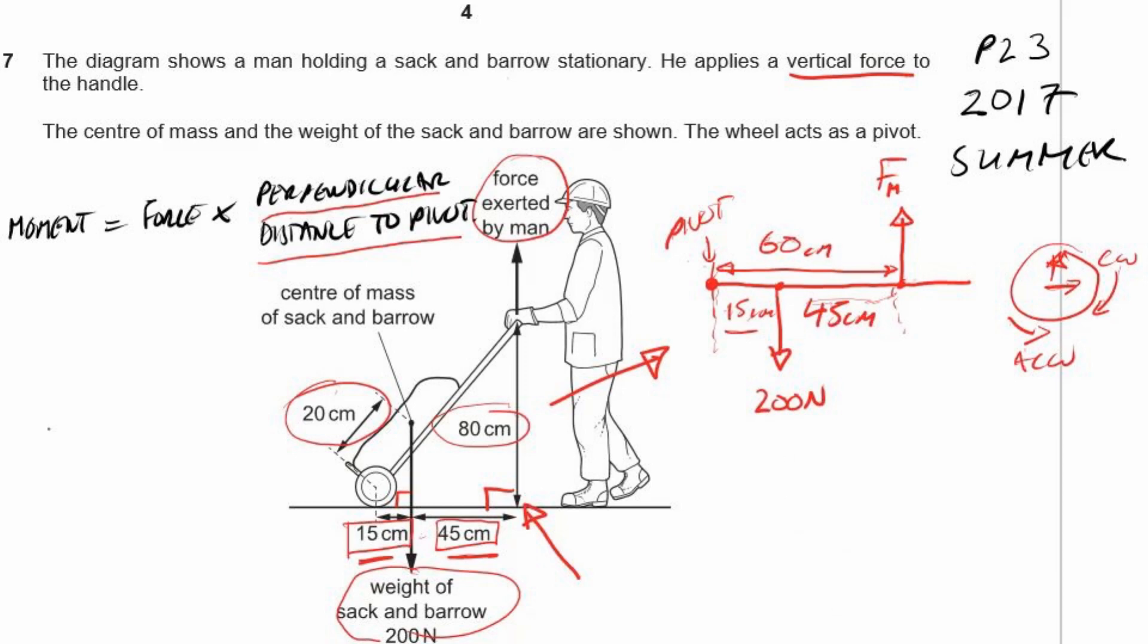OK. So straight away now, we can use our moment equals force times perpendicular distance. And we can combine that with the clockwise moment equaling the anticlockwise moment when things are balanced, when they're stationary. So let's put that in. We've got our clockwise moment equals our anticlockwise moment. Why do we know they're balanced? Because we're being told here, he's holding the sack and barrel stationary. OK. So our clockwise and our anticlockwise moment are equal to each other. So let's just put in the numbers.